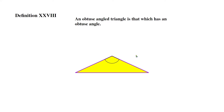Definition 28: an obtuse angled triangle is that which has one obtuse angle. Triangles cannot have more than one obtuse angle because the angles in a triangle add up to 180. So if a triangle has an obtuse angle, the name for it is an obtuse triangle.